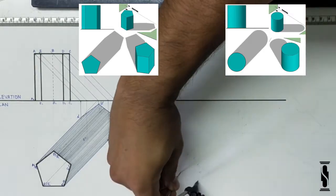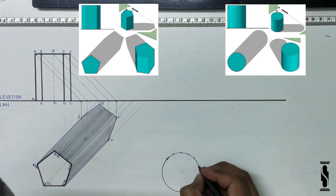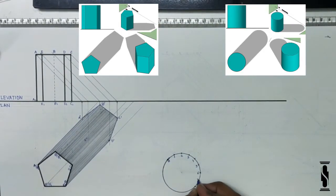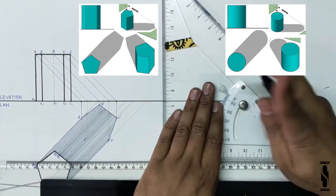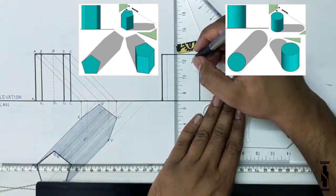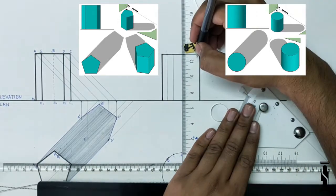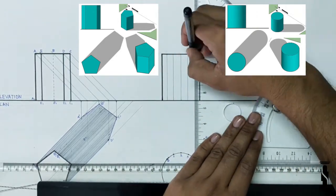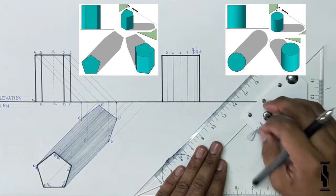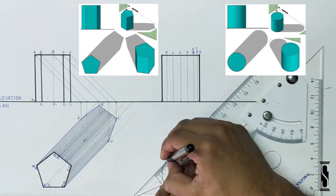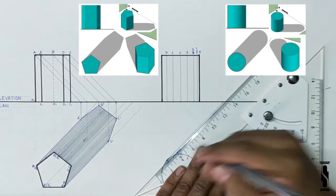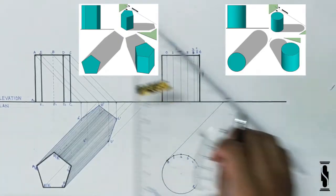First of all, draw the basic orthographic projection as per the given condition and draw a diameter at 45 degrees against the direction of the light rays. Now divide this semicircle into 8 equal parts and name them 0, 1, 2, 3, 4, 5, 6, 7, 8. Now draw a light ray on point 0 in plan and extend it to the ground line.